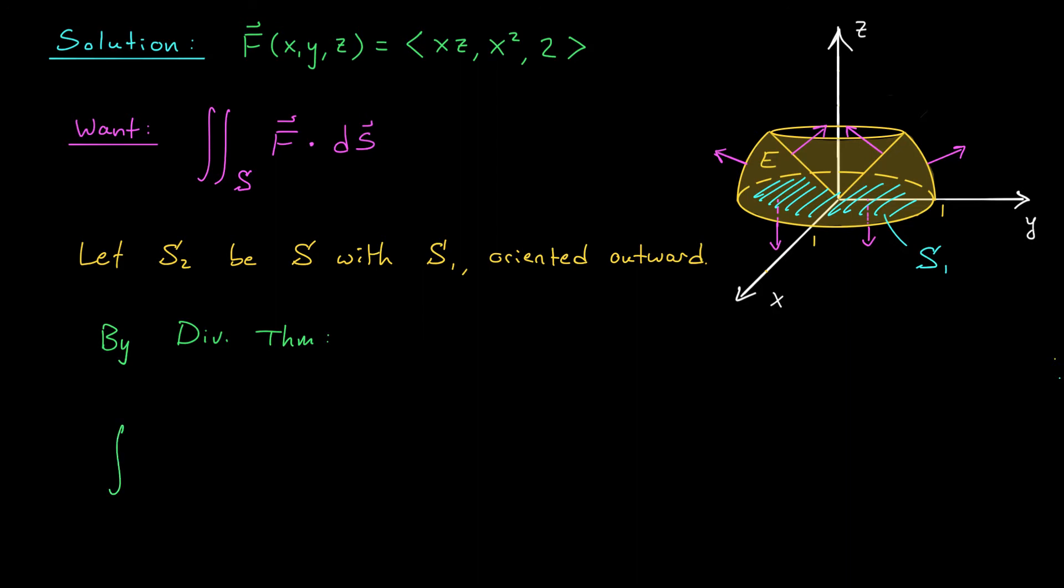We can compute the divergence by differentiating our component functions. The divergence is ∂/∂x of xz plus ∂/∂y of x² plus ∂/∂z of 2. And our last two terms are going to disappear. We're simply left with z. So we have to compute the triple integral over E of z dV.